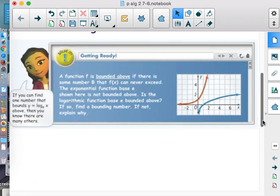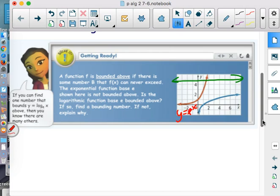It says a function f is called bounded above if there's some number b that f(x) can never exceed. So that means if I wrote a horizontal line somewhere, if the graph never gets there, then it's called bounded above. Well, the red one is not bounded above. That's going to keep going forever, up and up and up.